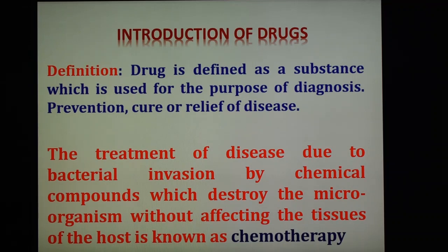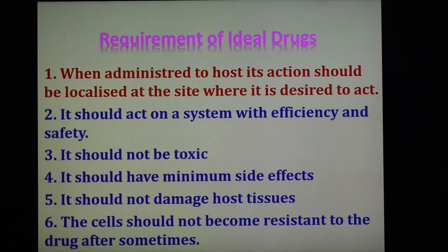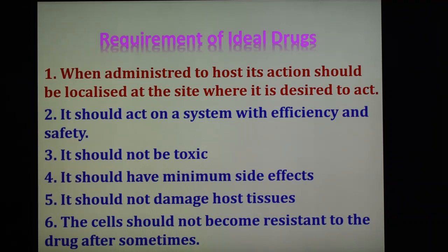The ideal requirement of a drug is that it should be localized at the site where it is required. So there are different requirements of ideal drugs. Number one: when the drug is administered to the host, its action should be localized at the site where it is desired to act. Second, it should act on the system with efficiency and safety. Third, it should not be toxic. Next, it should have minimum side effects. Another requirement is that it should not damage host tissues or physiological processes. And lastly, the cell should not become resistant to the drug after some time.